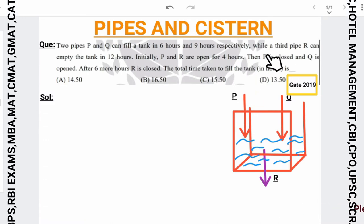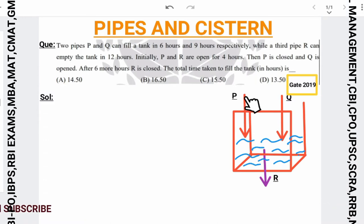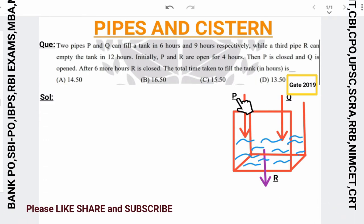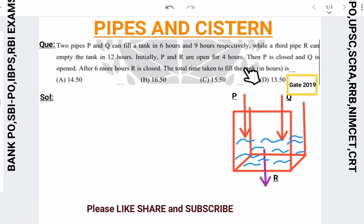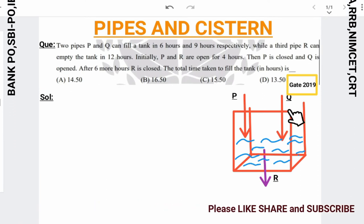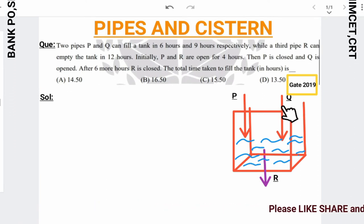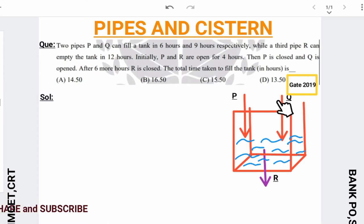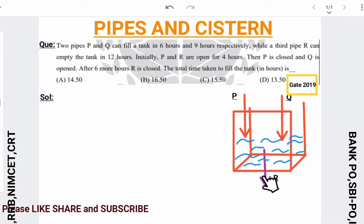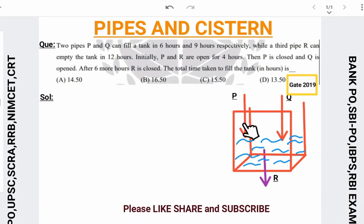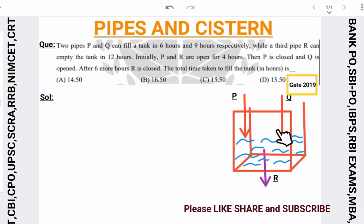P and R are open for 4 hours initially. Then P is closed and Q is opened. Initially Q doesn't work — after 4 hours P closes the tank.